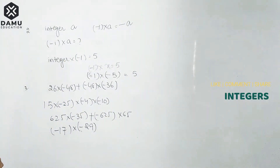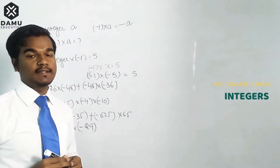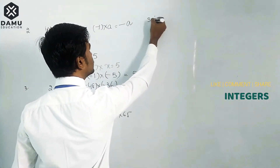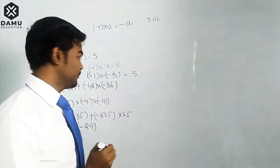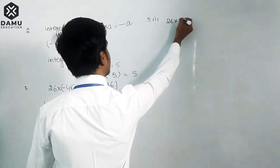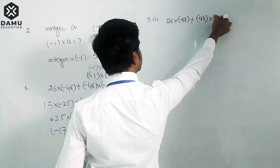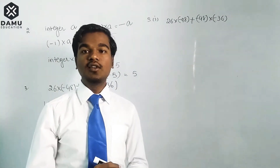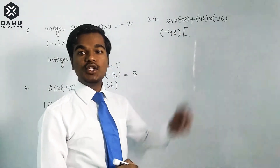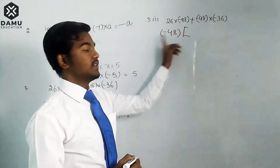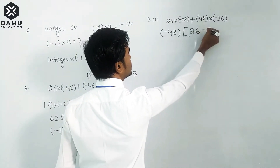The third question gives us 26×(−48) + (−48)×(−36). To simplify easily, we use the distributive property. Here minus 48 is common in both terms, so we take minus 48 as a common factor using distributive property over addition.